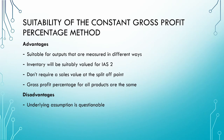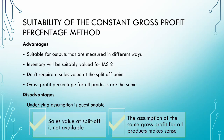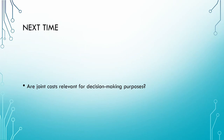Given these issues, the constant gross profit percentage method is suitable when the sales value at the split-off point is unavailable and when the assumption that all products should have the same gross profit percentage makes sense. This brings us to the end of the constant gross profit percentage method. Join us in our next video where we wrap up our series on joint and by-product costing by considering whether joint costs are relevant for decision-making purposes.